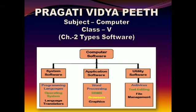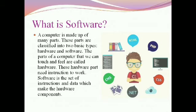First of all, we should know about what is software. A computer is made up of many parts, classified into two basic types: hardware and software. The parts of a computer that we can touch and feel are called hardware. These hardware parts need instructions to work. Software is the set of instructions and data which make the hardware components work.